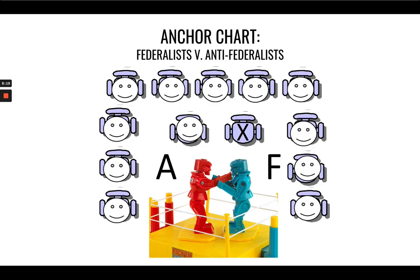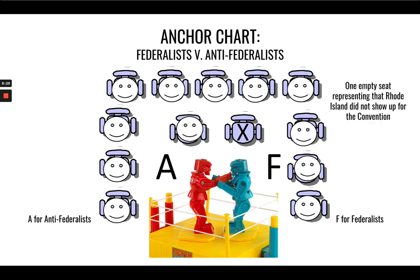Your anchor chart for Fed versus Anti-Fed — boxing it out: A for the Anti-Feds, F for the Federalists. One empty seat representing that Rhode Island did not show up for the convention.